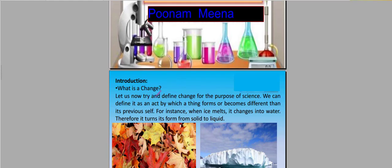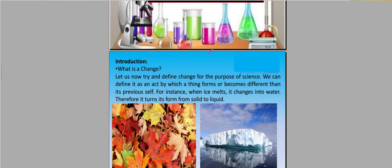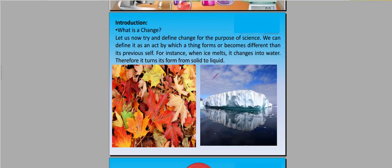Let us now try and define change for purpose of science. We can define it as an act by which something forms or becomes different than its previous self. For instance, when ice melts, it will be converted into water. Therefore, it turns from solid to liquid. The solid form of ice is changed to liquid. This is a change.